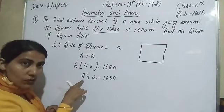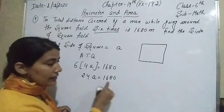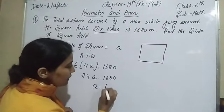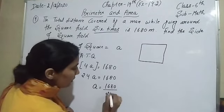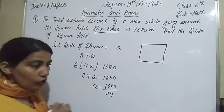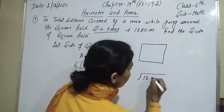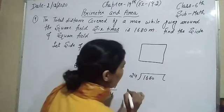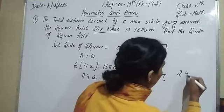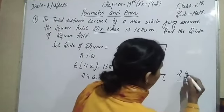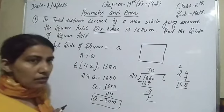24a = 1680. Since 24 is multiplying on this side, it will be divided on the other side, so a = 1680 ÷ 24. Dividing: 7 fours are 28, 7 twos are 14, plus 2 is 16 — so 168 divided gives 70, remainder zero. Therefore a = 70. The side of the square is 70 meters.